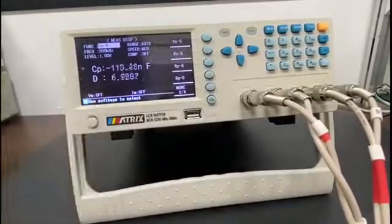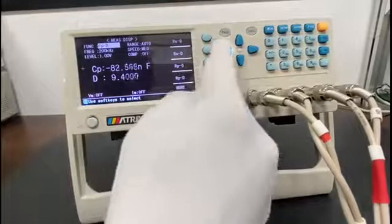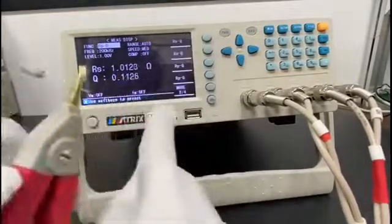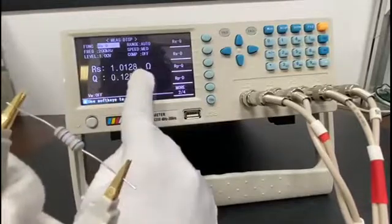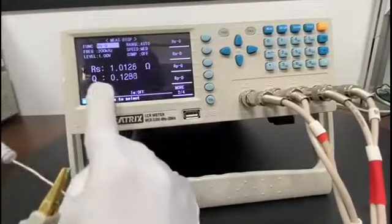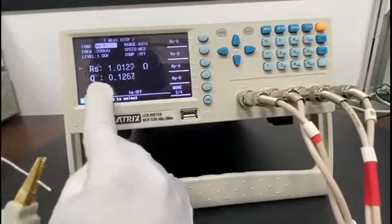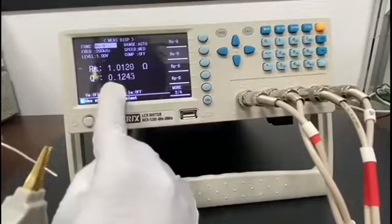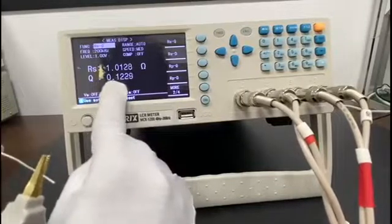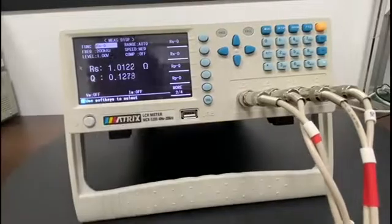So let's measure the resistance. We have to go to resistance in series. We can see the resistance in series is 1.01 ohms and the Q indicates the quality factor. The quality factor of this resistor is 0.12.